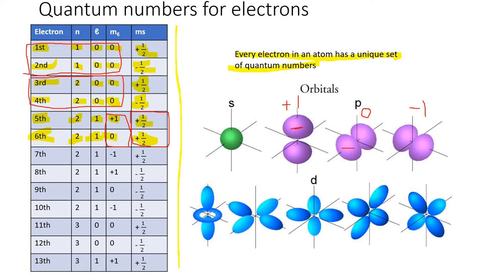The same reasoning applies to the seventh electron. We still have options in n equals two, l equals one. Looking at what's already occupied — plus one and zero p orbitals — we still have the negative one option available. To avoid crowding electrons, we place the seventh electron in the m-sub-l equals negative one orbital, and align the spin to plus one-half.